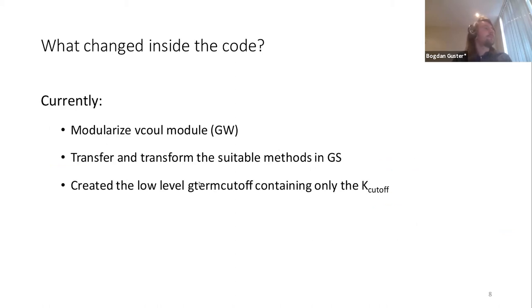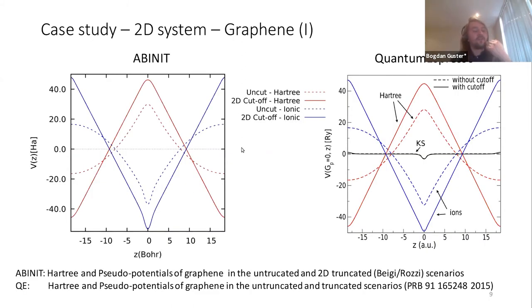Inside the code, we've tried to extract from the vcoul module that was present at the GW level and transform these suitable methods into the ground state part. Finally, we've created this vcutoff_gterm that is only the array that contains the truncation to the Coulomb kernel that is applied everywhere needed at the ground state level.